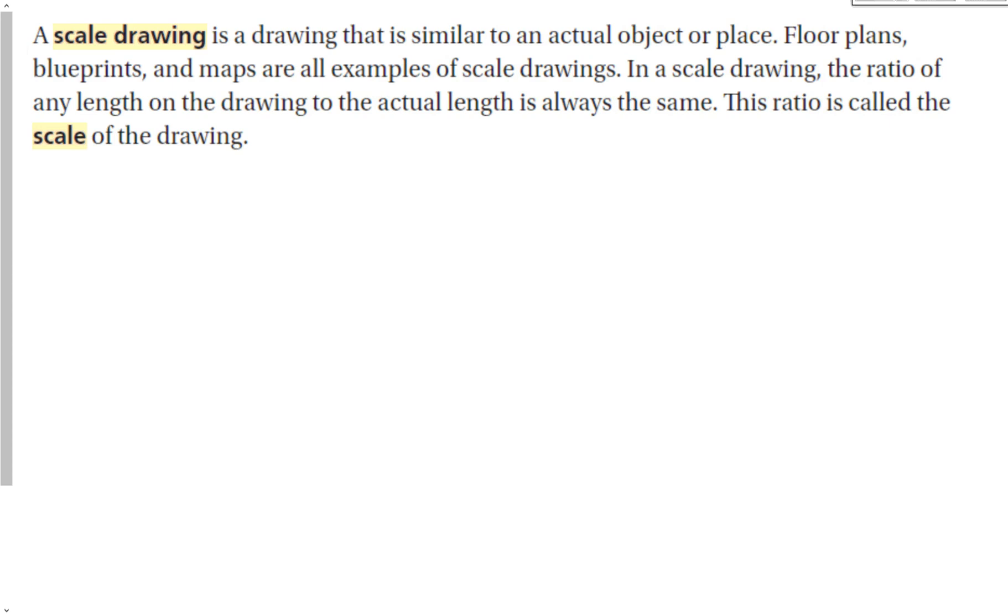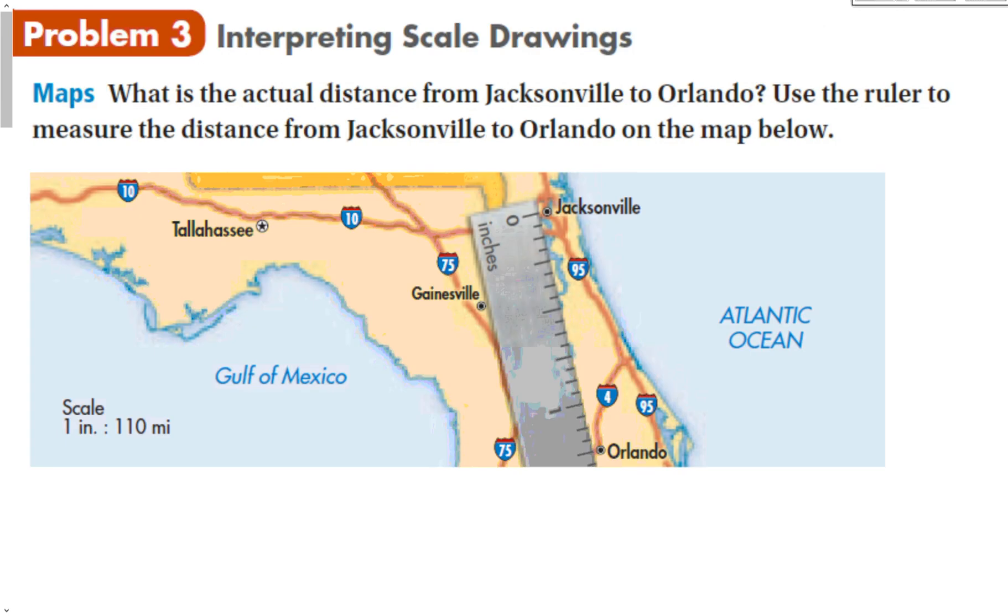Next, we can talk about scale drawings. A scale drawing is a drawing that is similar to an actual object or place, like a house floor or building floor plan, blueprints, and maps are all examples of scale drawings. In a scale drawing, the ratio of any length on the drawing to the actual length is always the same. This ratio is called the scale. If you ever see on a map or problem that says not to scale, then this doesn't actually work. But usually, most maps, especially real ones, are going to use some sort of scale.